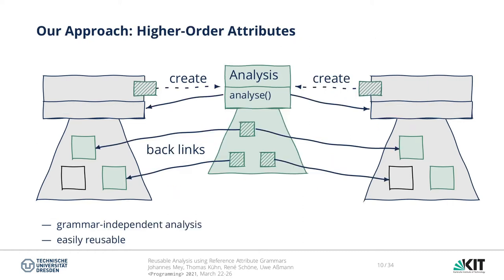To arrive at a reusable definition of static analysis, we propose to combine the attribute grammar-based analysis with the idea of an intermediate representation. The principal idea is to construct an analysis-specific intermediate representation using higher-order attributes, perform the analysis on this representation, and then project the results back to the original AST. Thus, the analysis itself is independent of the base grammar.